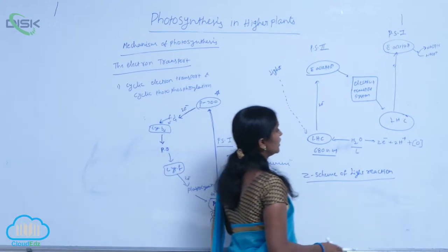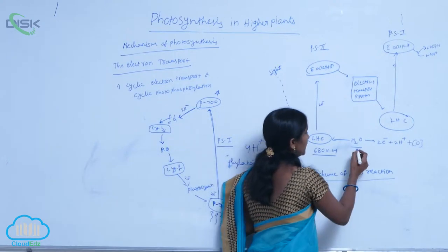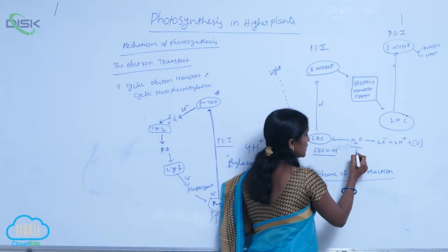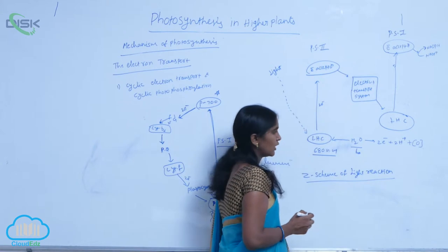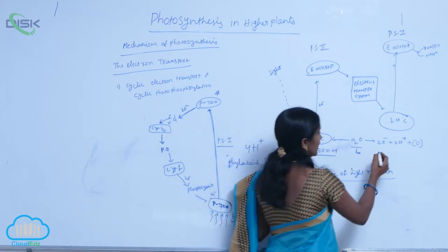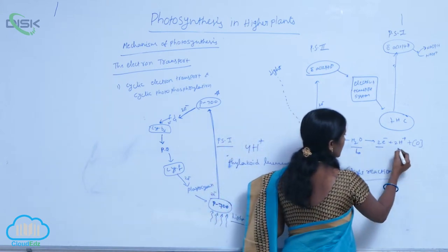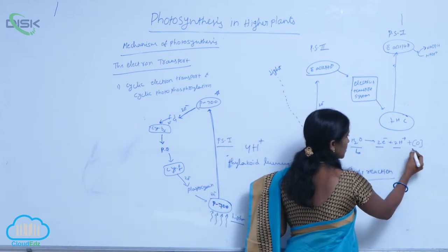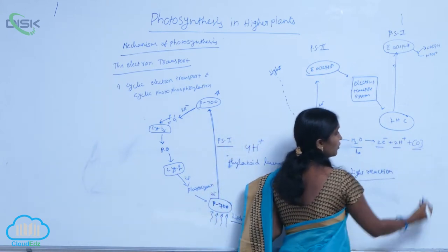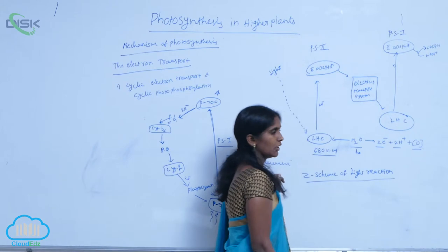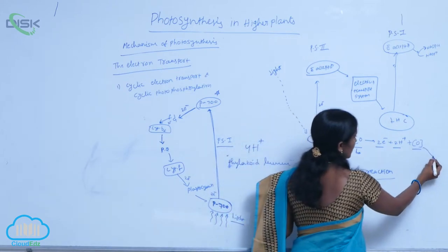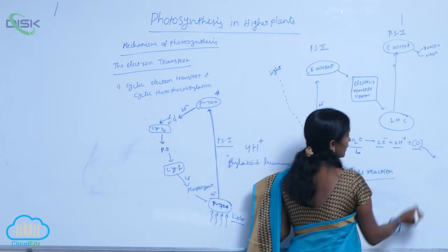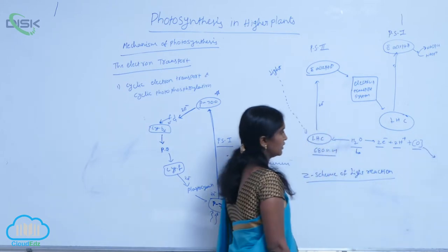Here, water molecule is split in the presence of light. The water molecule splits into 2 electrons, 2 H+ and half O2. The O2 is released into the atmosphere.